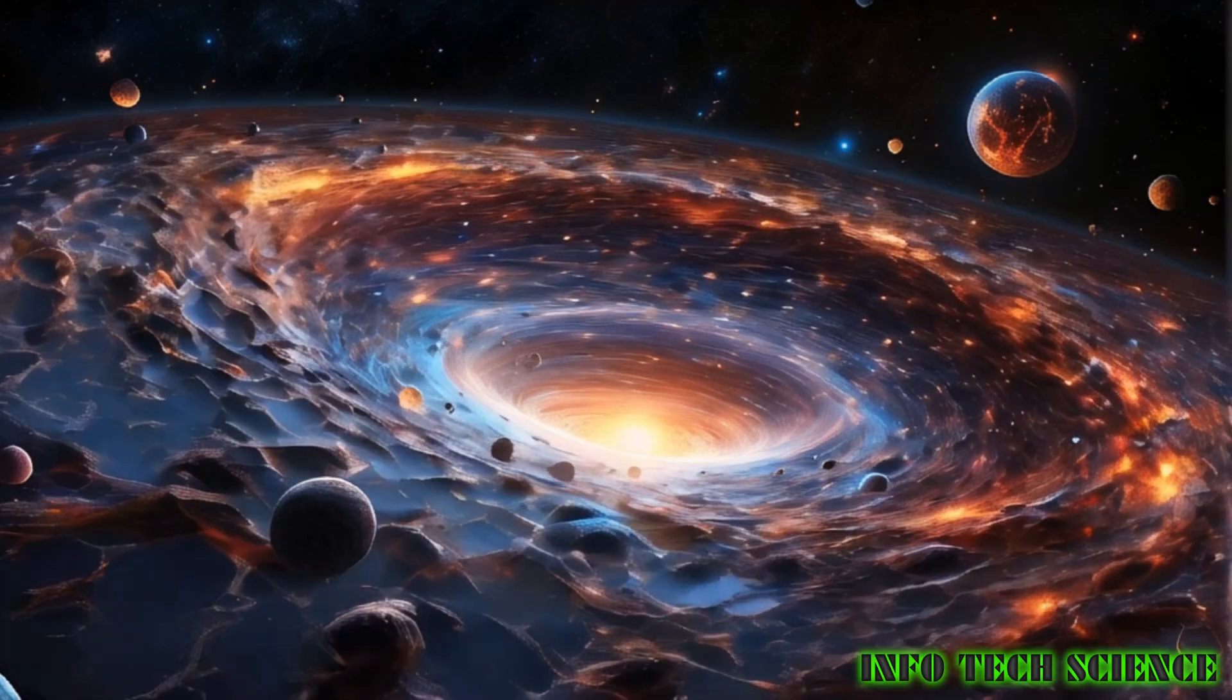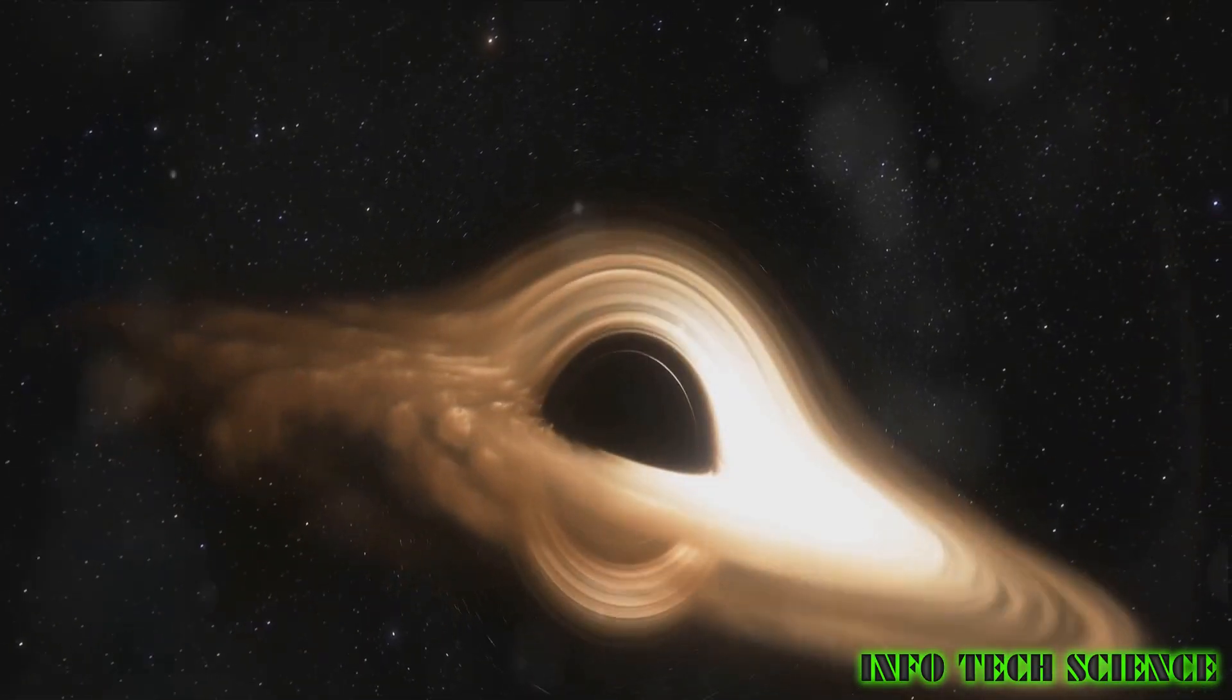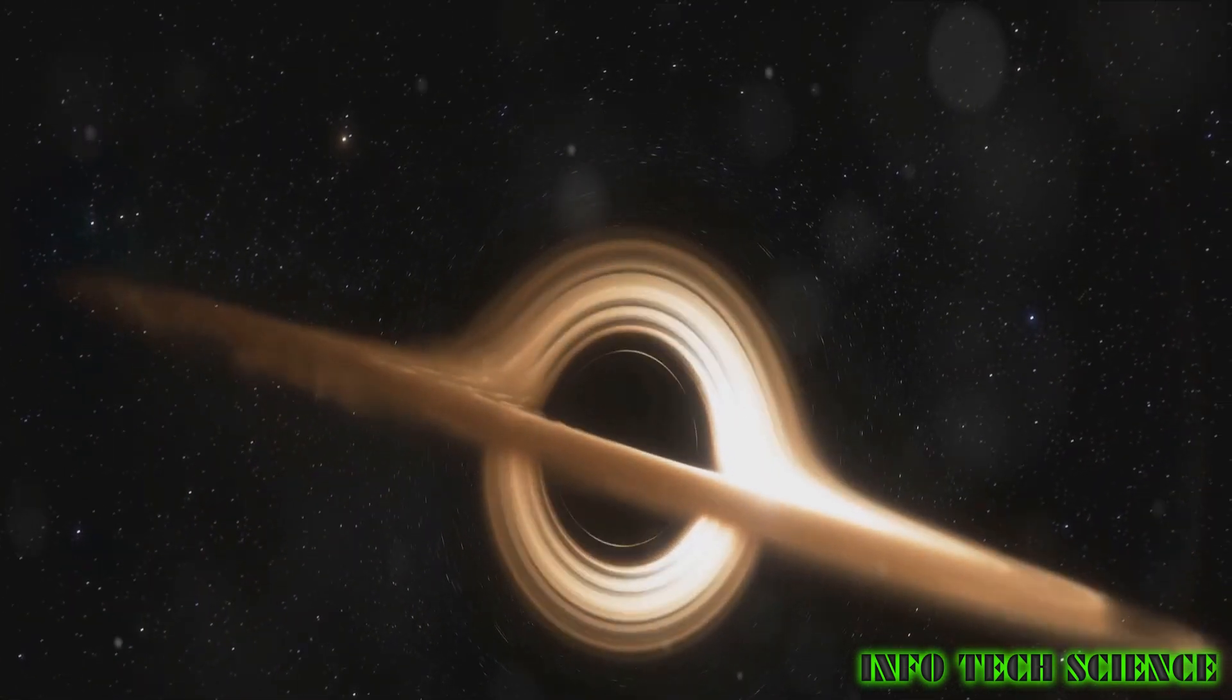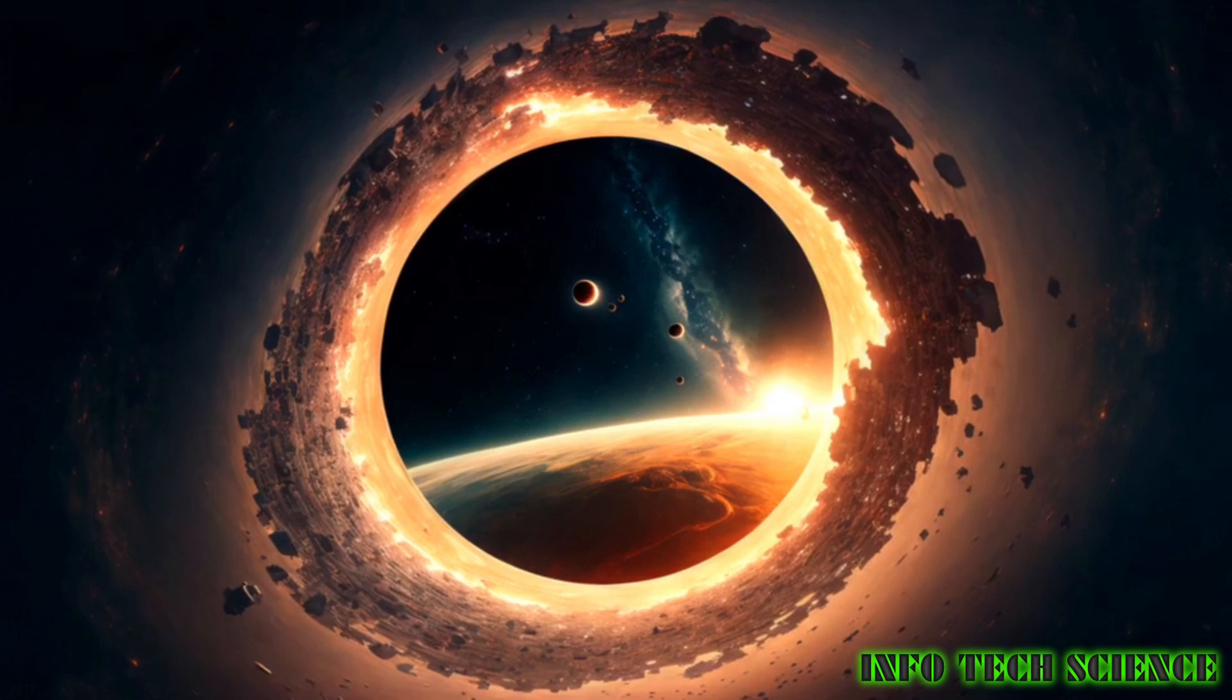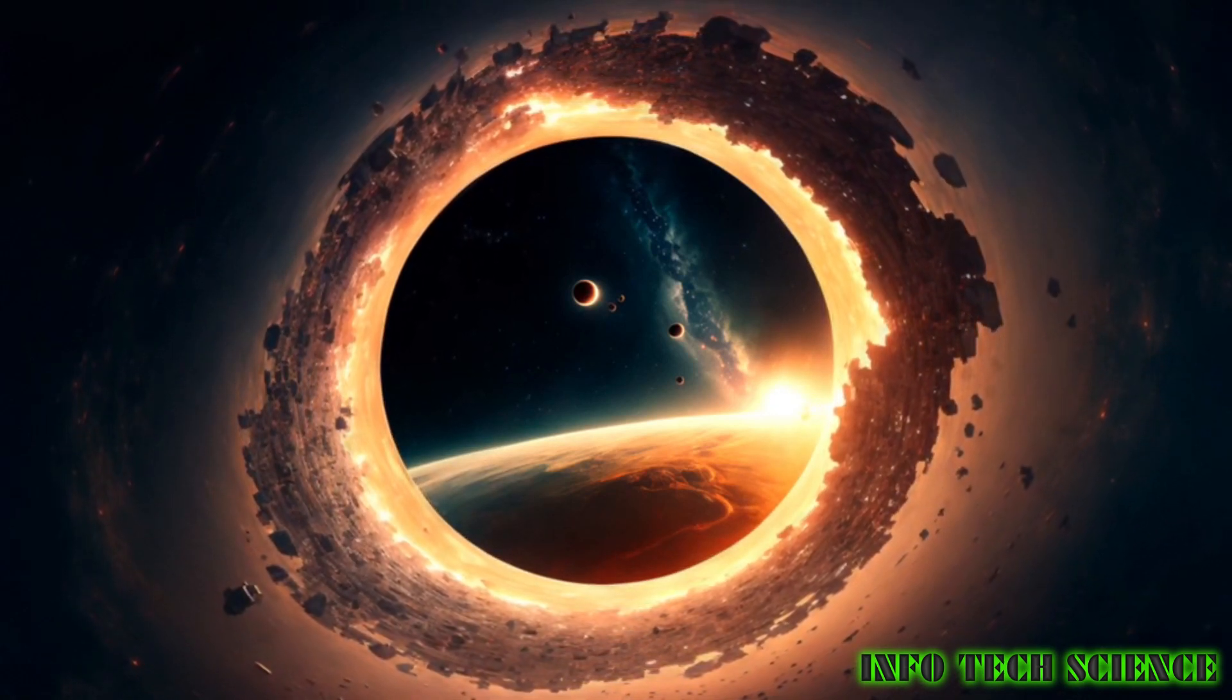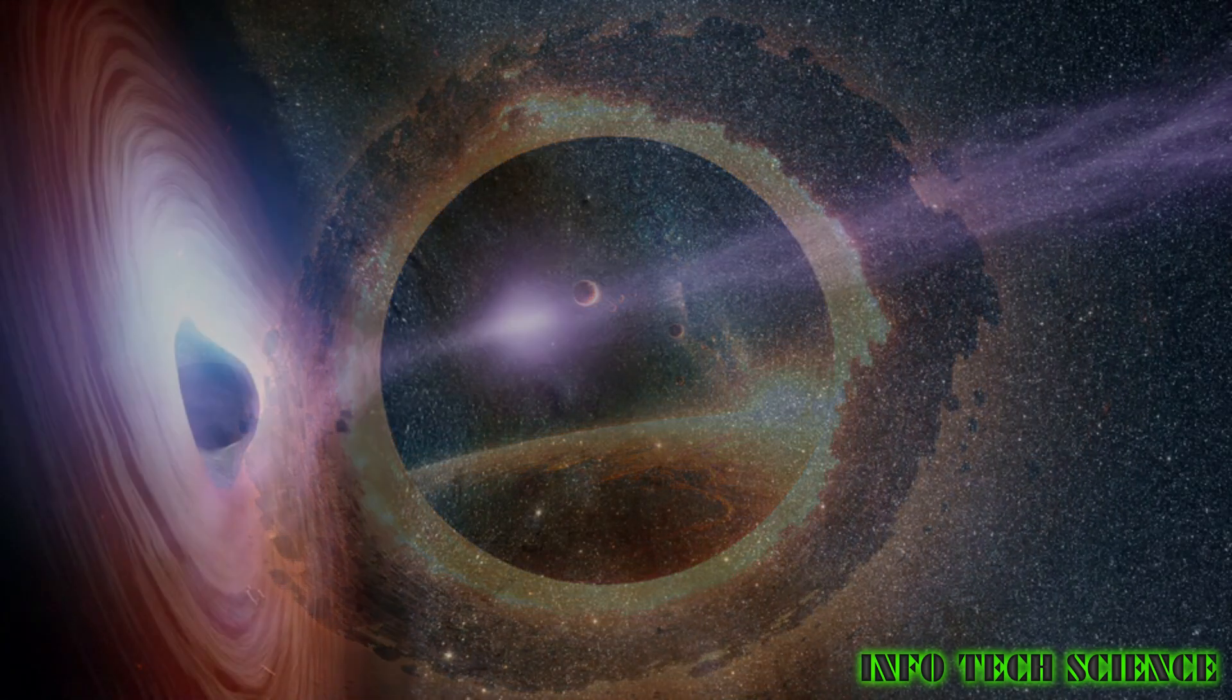Black holes continue to grow throughout their lifespan, gobbling up any material that strays too close. As this happens, the region where gravity becomes so strong that nothing can escape expands, and the black hole consumes even more nearby material. It's like a sinkhole, but instead of ground collapsing, it's a gravitational sinkhole that accelerates as its event horizon grows.